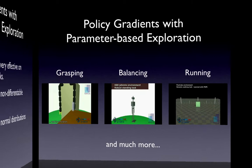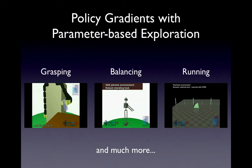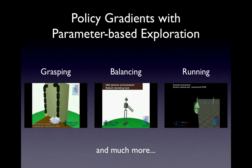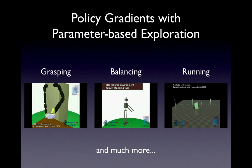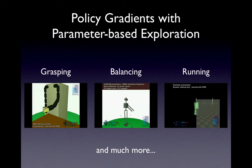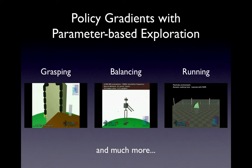Here we see some examples of tasks that could be learned with PGPE. The first one is the grasping task with an 8 degree of freedom robot arm that grasps glasses and plates with different shapes from different positions in its workspace. The second example is the simulation of a humanoid robot that has learned to keep standing while it is perturbed by external forces via making appropriate backsteps.